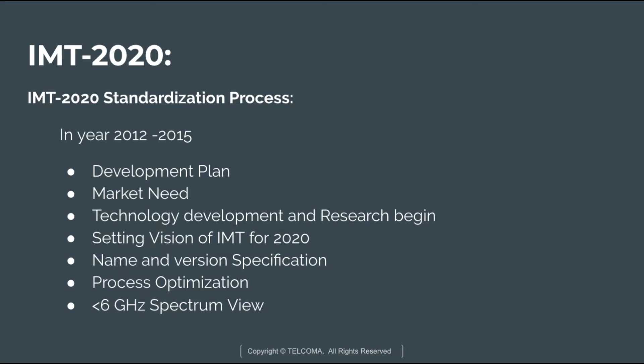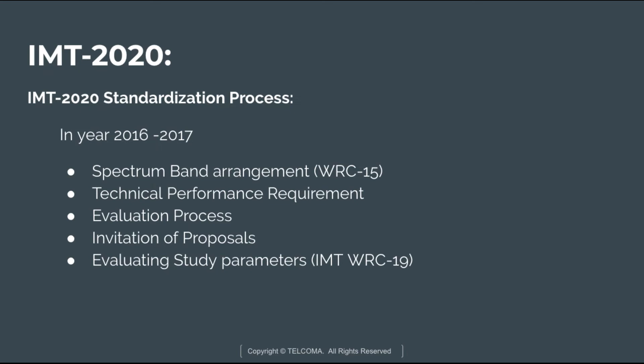The IMT 2020 standardization process starts in 2012. From 2012 to 2015, it works on development plans, provides a survey for depicting the market need, technological development, and research. Then it sets the vision of IMT for 2020, gives the name and version for the specification process, optimization, and the less-than-6 GHz spectrum view.